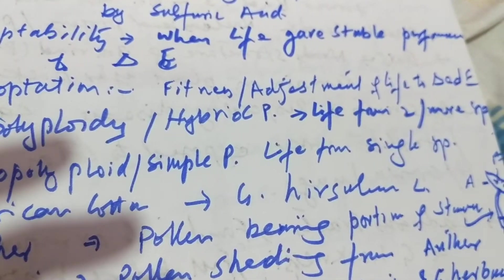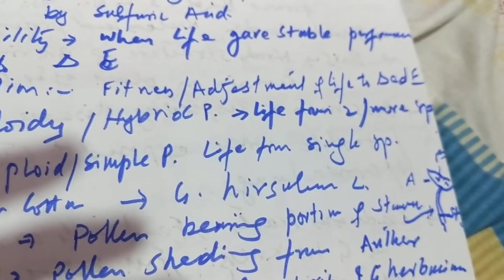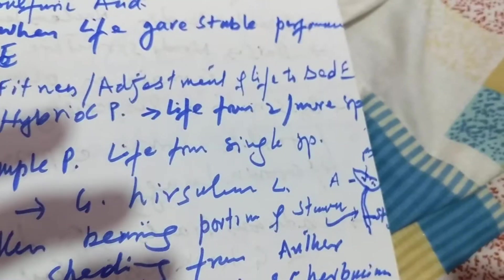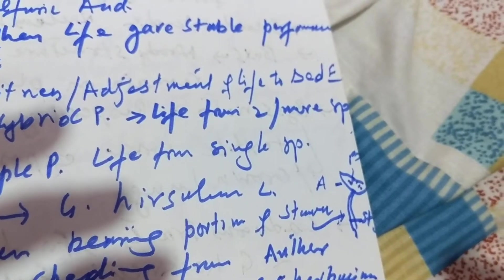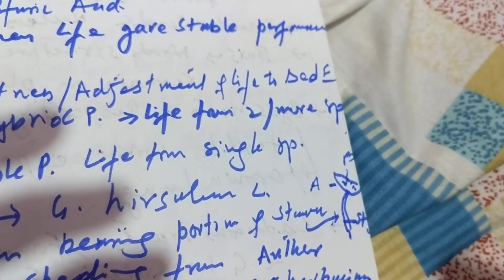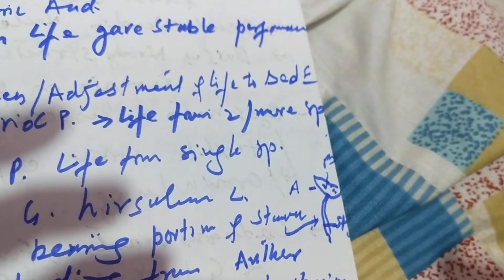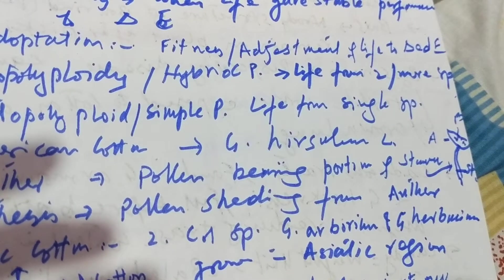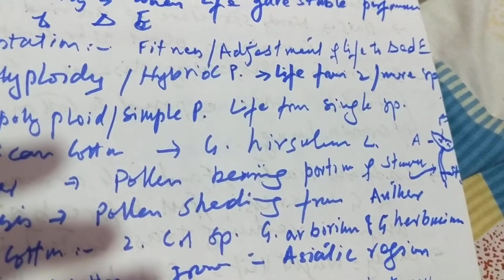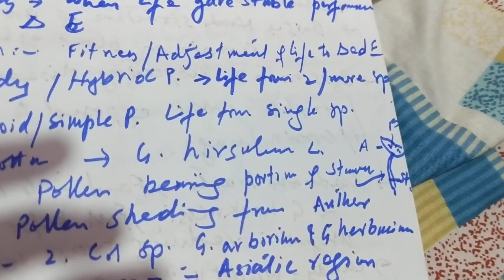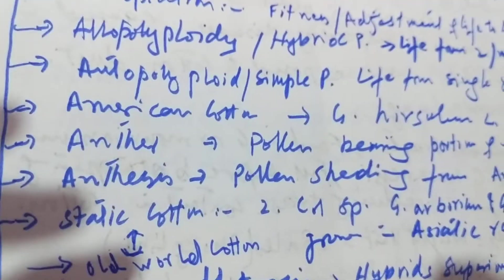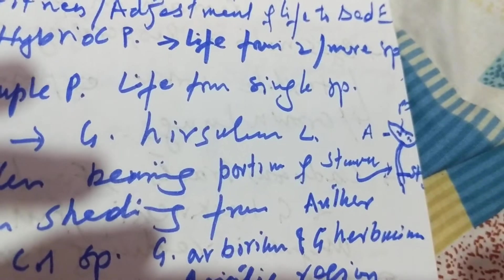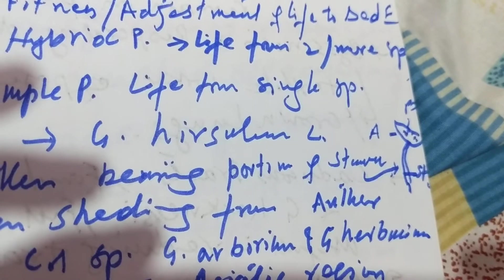Adaptation is the fitness or adjustment of life to a changed environment. Allopolyploidy or hybrid polyploidy is when a polyploid is derived from two or more species. Autopolyploidy or single polyploidy is when the polyploid comes from a single species, such as American cotton Gossypium hirsutum L.